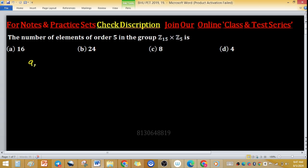In a direct product, suppose we have an element (a,b) that belongs to Z₁₅ × Z₅. We have to find the number of elements whose order is 5. So what is the order in a direct product?